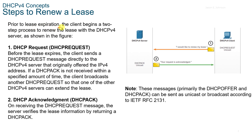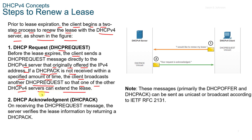Prior to lease expiration, the client begins a two-step process to renew the lease with the v4 server. The client sends a DHCP Request message directly to the server that originally offered the v4 address. If the DHCP ACK is not received within a specified amount of time, the client broadcasts another request so that one of the other v4 servers can extend the lease. On receiving the request message, the server verifies the lease information by returning a DHCP ACK.